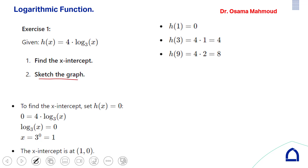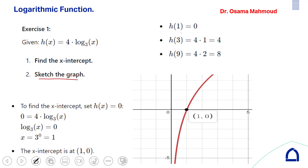To sketch the graph, you need some points — substitute values and find the corresponding y values. To sketch the logarithm, you need the x-intercept because there is no y-intercept: the logarithm curve doesn't intersect the y-axis, it only intersects the x-axis. The opposite is true for exponential: it intersects the y-axis but never touches the x-axis.